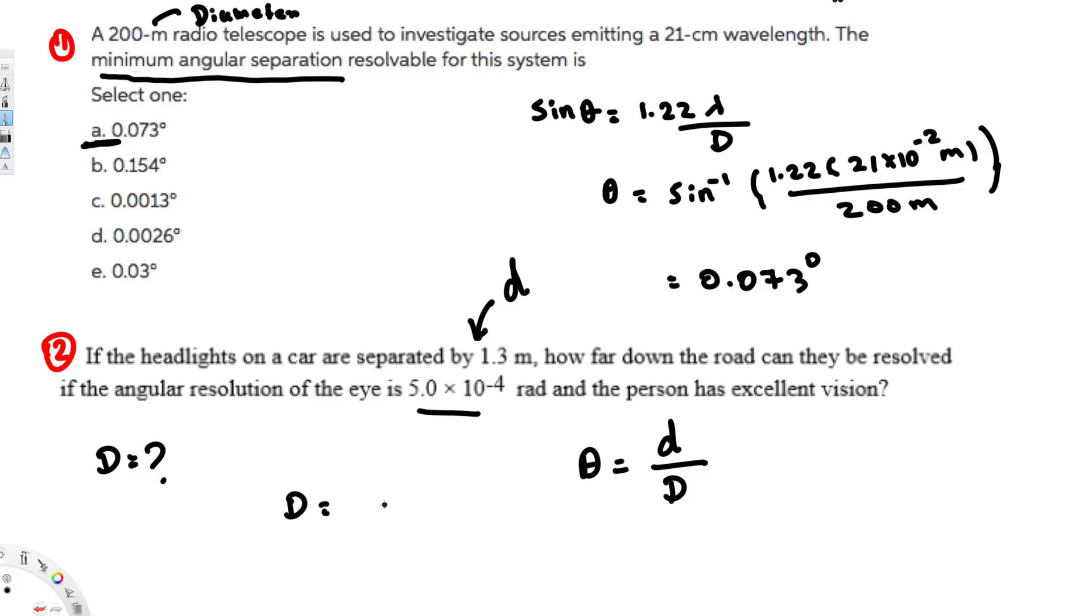D is going to be equal to d over theta, and d we know is 1.3, and theta in radians is 5 times 10 to the power of minus 4.